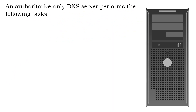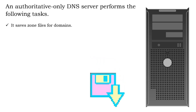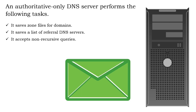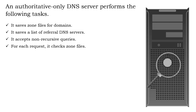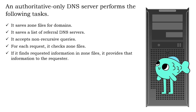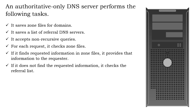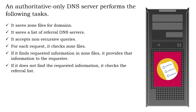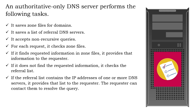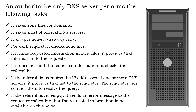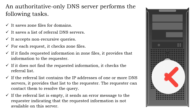An authoritative-only DNS server performs the following tasks: it saves zone files for domains, saves a list of referral DNS servers, and accepts non-recursive queries. For each request, it checks zone files. If it finds the requested information, it provides it to the requester. If not, it checks the referral list. If the referral list contains IP addresses of one or more DNS servers, it provides that list to the requester. If the referral list is empty, it sends an error message indicating that the requested information is not available on this server.